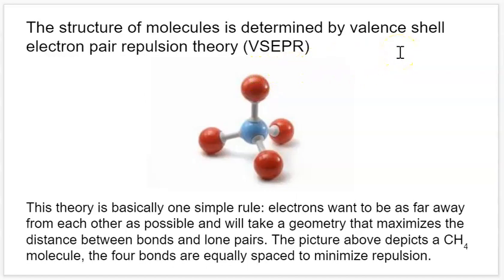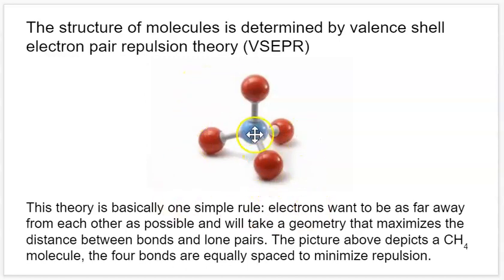As complicated as this sounds, it's pretty simple Coulomb's law stuff. Basically, electrons repel electrons, and bonds are made out of electrons. Therefore, bonds are going to repel bonds, which means that the geometry of any given molecule is going to be one which maximizes the distance between those bonds and maximizes the angles between them. Here we have what could be a CH4 molecule, and this is the geometry it's going to take with a central atom connected to four different things.